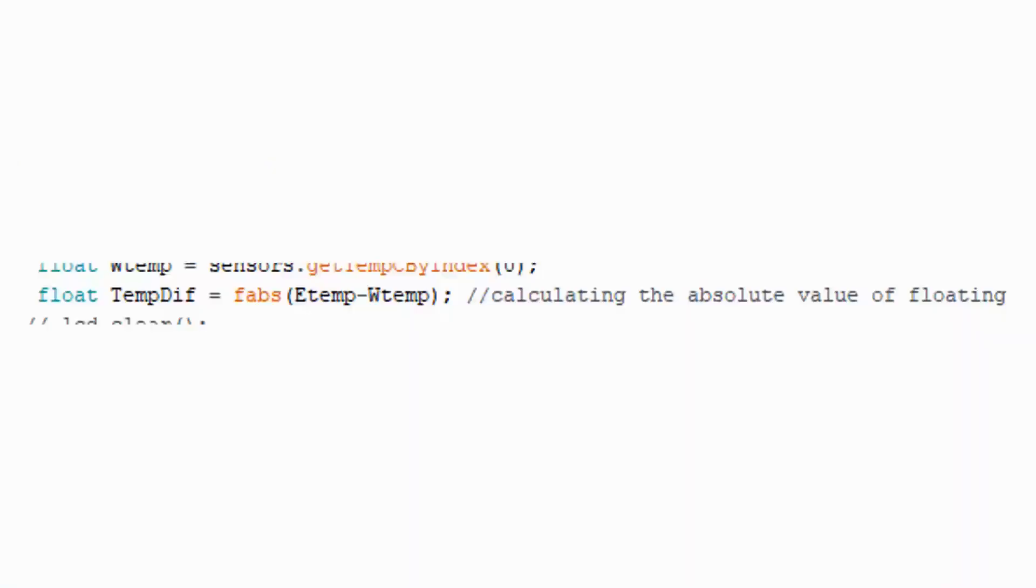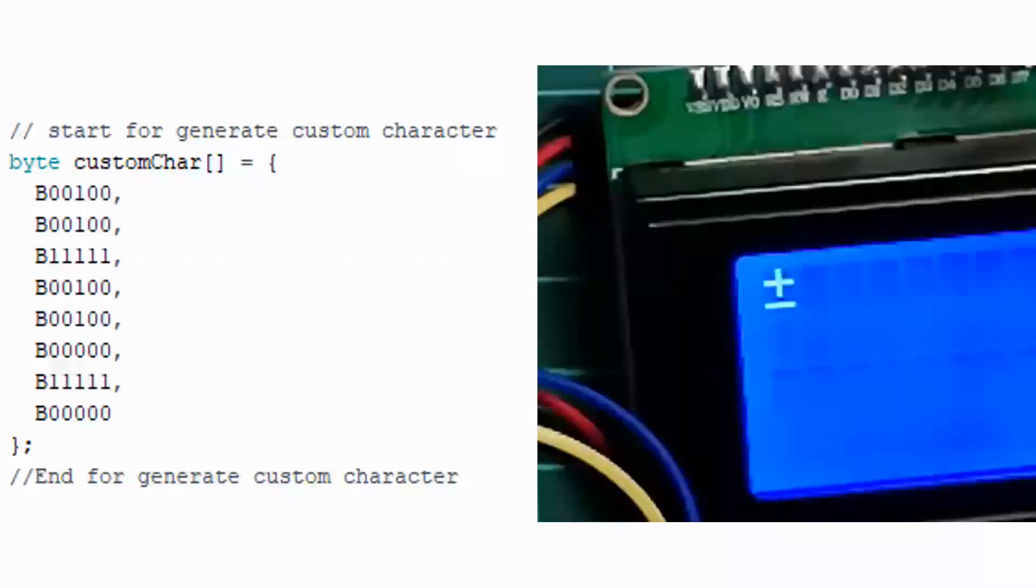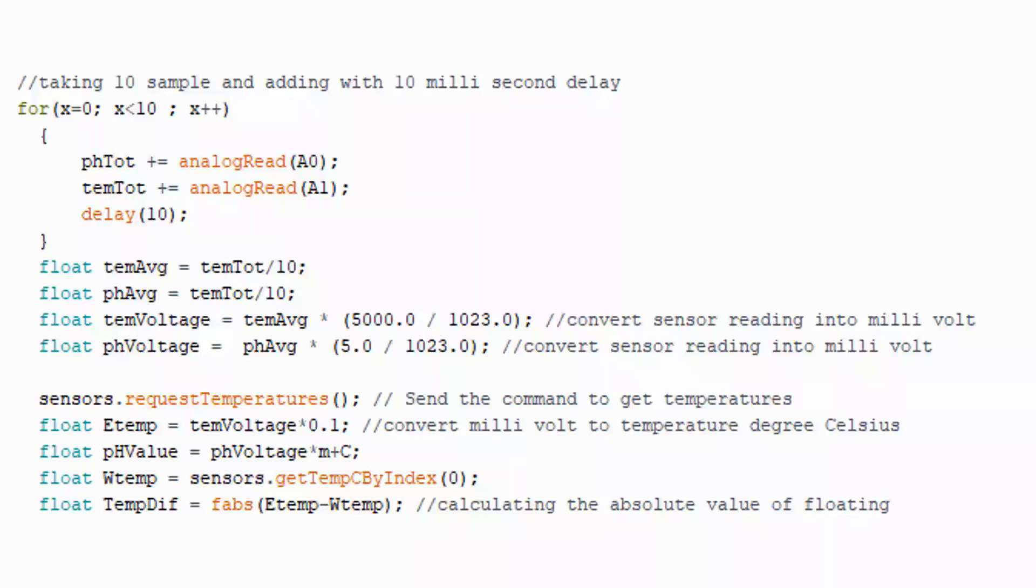For working of this code, include math.h is not necessary as it is already included by default. But here, for demo, to show the working of f abs, that is floating point absolute value, we are including it. So, using or not using this library won't affect your code. In software code, we also generated a special character for plus minus. This software code basically takes 10 different readings at fixed interval of time and calculates average. The average value is further converted to voltage and then pH using formula of a straight line.